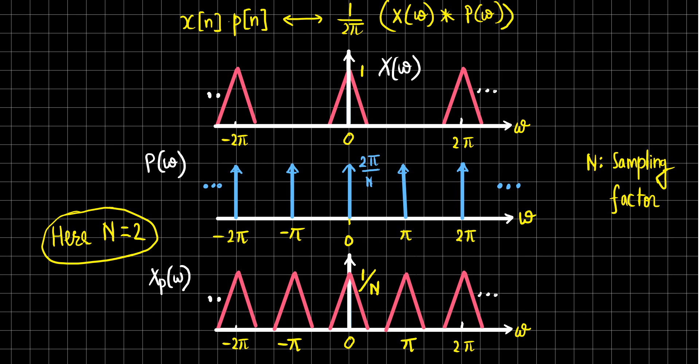This is the effect of sampling of discrete time signals. We shall see more about other types of operations on discrete time signals in the next module.